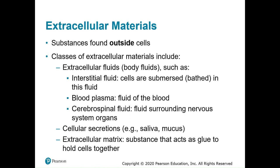Saliva and mucus are produced by glands — for example, the parotid gland makes saliva inside the mouth. Cells, especially those in the back of our throat and digestive tract, secrete mucus as an immune response to expel foreign substances or to facilitate movement of particles. The extracellular matrix acts as a glue that holds cells together.